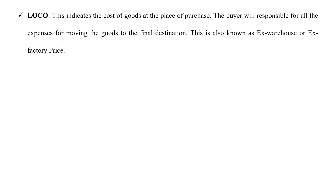The first type is loco. It indicates the cost of goods at the place of purchase. The buyer will be responsible for all expenses for moving the goods to the final destination. The price will not include any transportation charges, so the buyer is responsible for moving goods from the place of purchase. That is why it is also called an ex-warehouse or ex-factory price.